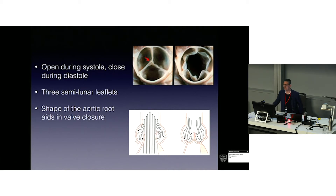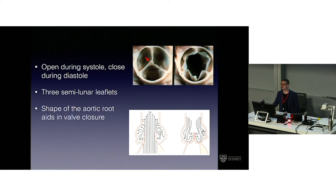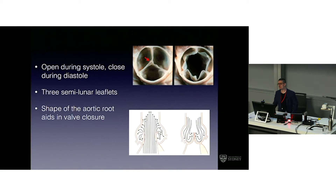There are three semilunar leaflets. The shape of the aortic root aids in valve closure. The aortic root is from the valve to the sinotubular junction, and it's curved. There are three sinuses, each bulging out, which help in closure of the valve. During systole, flow goes laminar straight, but also starts to swirl into the sinuses. Then during diastole, more of that swirling causes aortic valve closure. This is important because if someone has an artificial aortic root — a valve sewn in with a conduit — it does not have the same shape. Tyrone David in Toronto formulated this, and we're up to the Tyrone David 5 operation, where he tries to shape the sinuses to be more similar to the native valve.